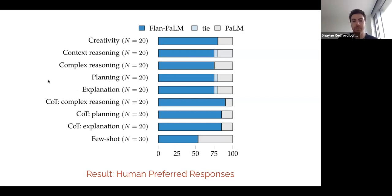And to do this, we compiled 100 manually curated questions or prompts that tested creativity, reasoning from long articles and other contexts, arithmetic and verbal reasoning, planning, explanation. And for a subset of them, we also templatized them in a chain-of-thought setting to see how that would affect performance, as well as a few-shot. And we found in 80% of cases, Flan-PaLM was preferred for these types of creative open generation prompts to the PaLM responses.